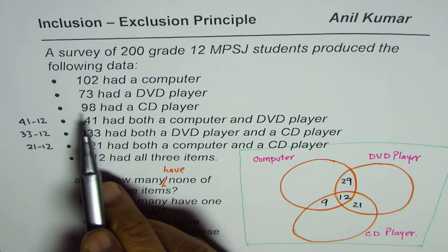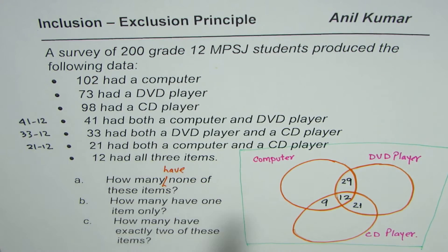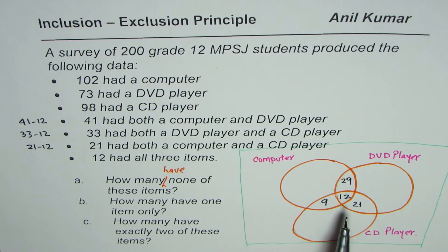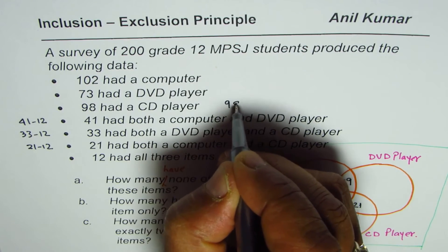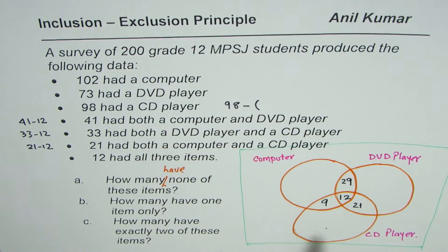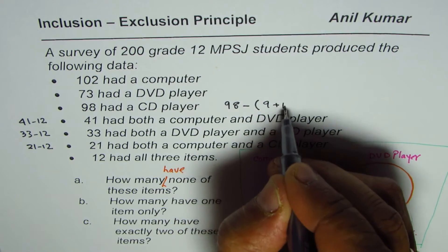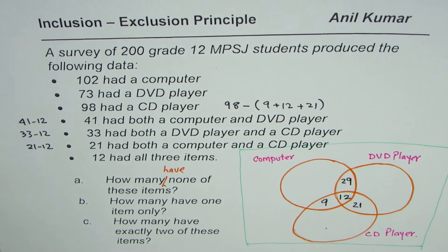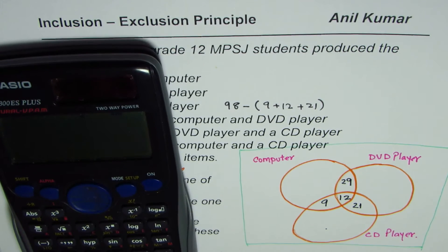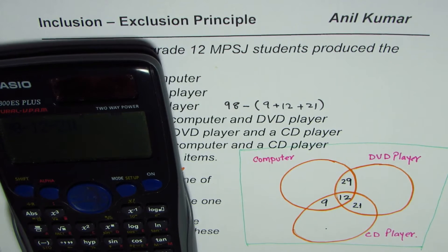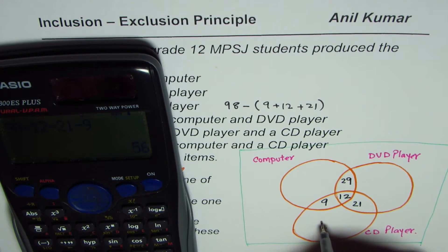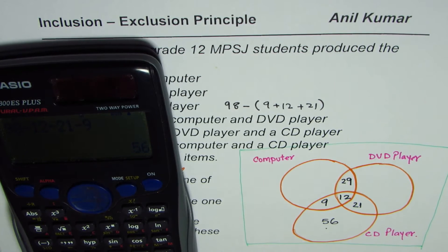98 had a CD player in total. To find the CD-only region, we subtract all overlapping portions: 98 minus 9 minus 12 minus 21, which gives us 56. So 56 goes in the CD player only region.